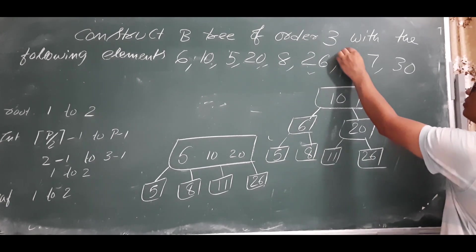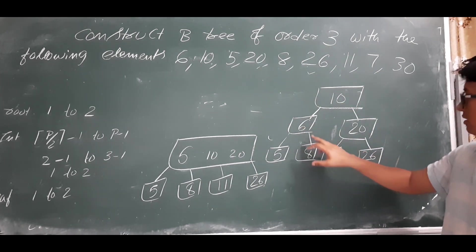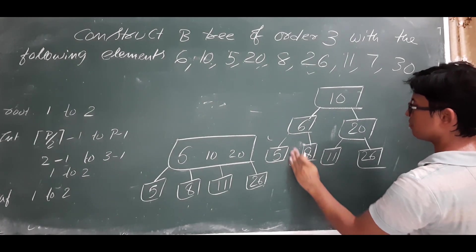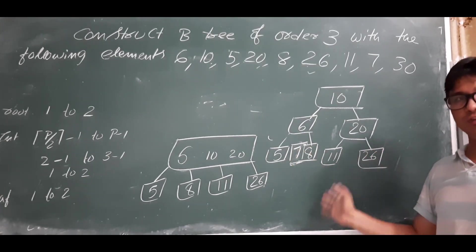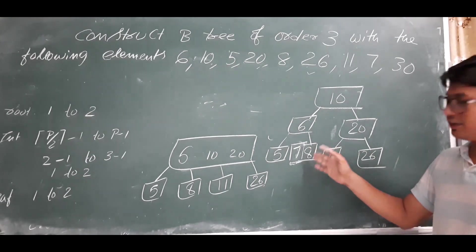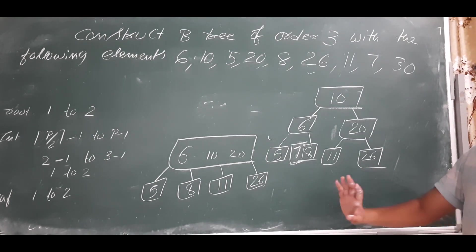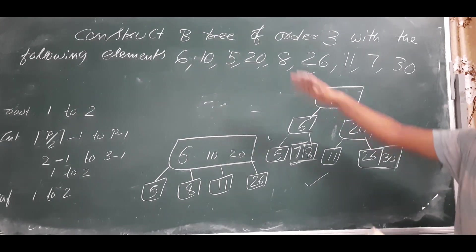We have finished inserting up to 11. Now I want to insert 7. 7 is less than 10, greater than 6, and less than 8, so it will be inserted in that leaf node. Please remember: always insert elements at the appropriate leaf nodes only — not at the parent or internal node level. If there is overflow then promote to the parent. 7 is inserted successfully. Now I insert 30: 30 is greater than 10, greater than 20, greater than 26, so it goes in the rightmost leaf. No overflow — this completes the B-tree construction with order 3.